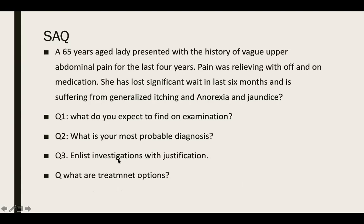When asked to justify investigations, divide them into: confirmation of diagnosis, extent of disease, and fitness for anesthesia. For example, when you write CBC (complete blood count), write why you want to do it. CBC is done to know the hemoglobin level — for elective surgery, hemoglobin should not be less than 10 gram percent. WBC count will tell us about inflammation or infection.